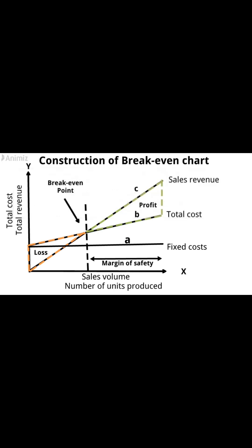The angle of incidence is the angle at which the sales revenue line cuts the total cost line. A large angle indicates that profit is being made at a high rate. A high margin of safety combined with a large angle of incidence is an indication of a favorable business position.